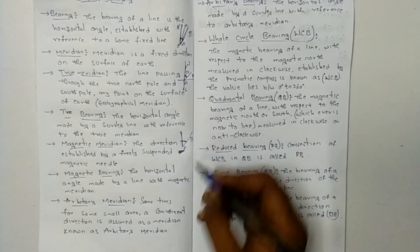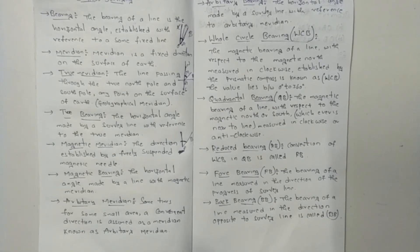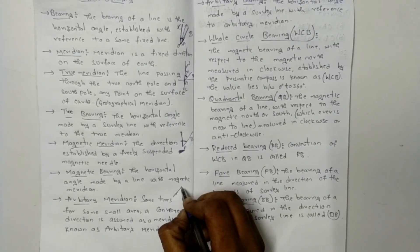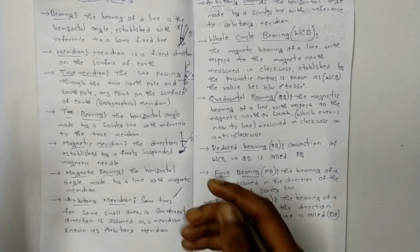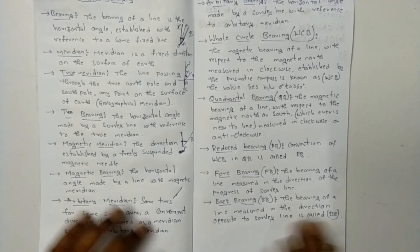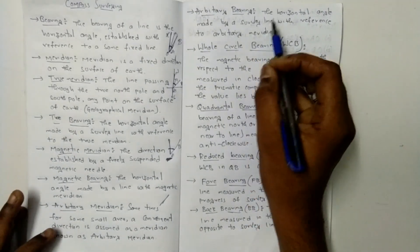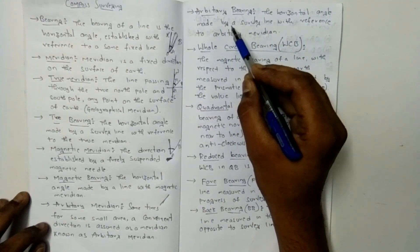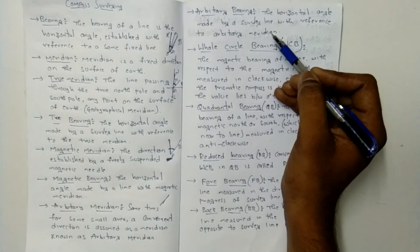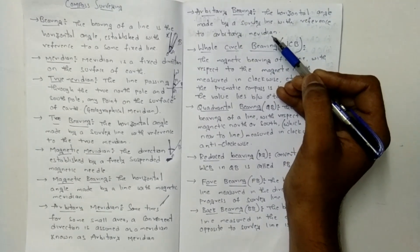Arbitrary meridian: sometimes for small areas we assume a convenient reference direction. In such cases we assume a fixed direction and measure angles from it. This assumed direction is called the arbitrary meridian, and the horizontal angle made by the survey line with reference to the arbitrary meridian is called the arbitrary bearing.